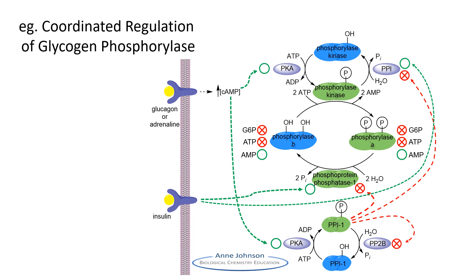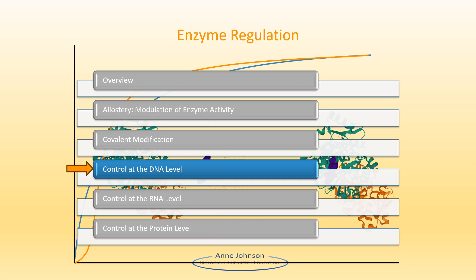Binding of glucagon in the liver and adrenaline in muscle result in the intracellular increase in cyclic AMP concentration. The effects of insulin binding are mediated in other ways. Allosteric and covalent modifications take effect quickly but last only a short period of time. To make longer lasting changes, other approaches are required.